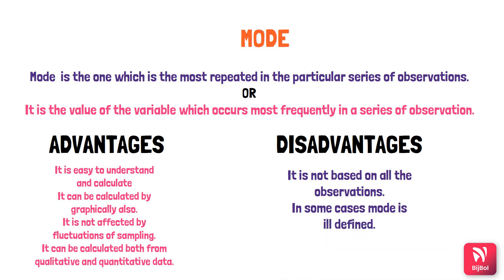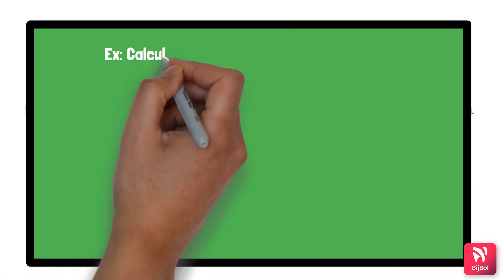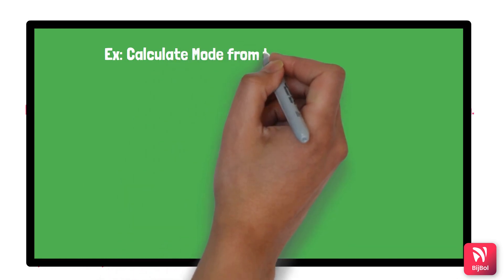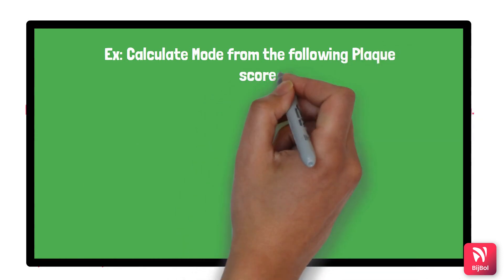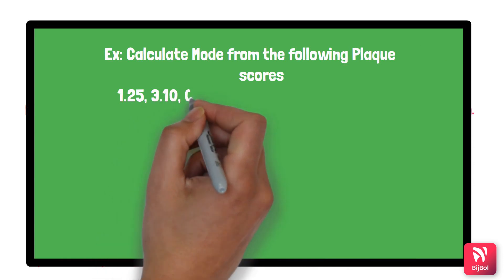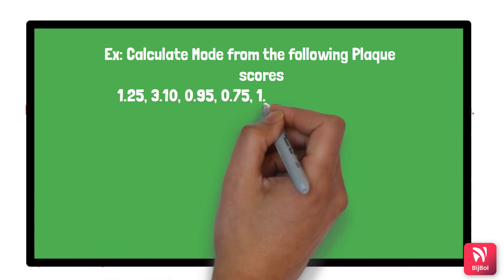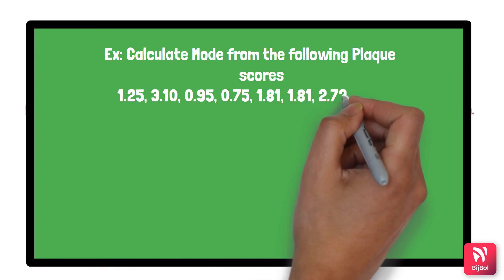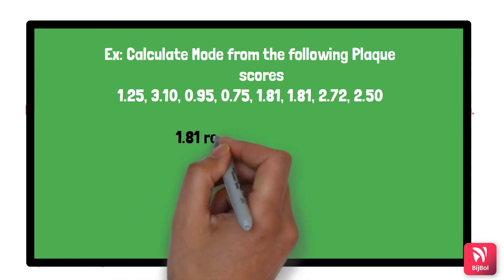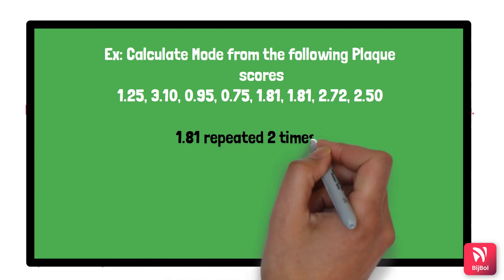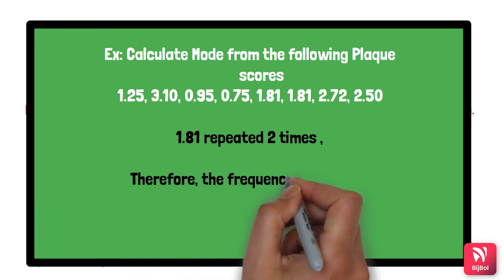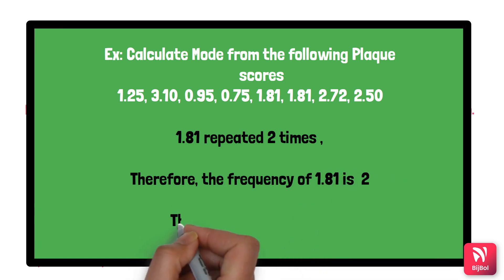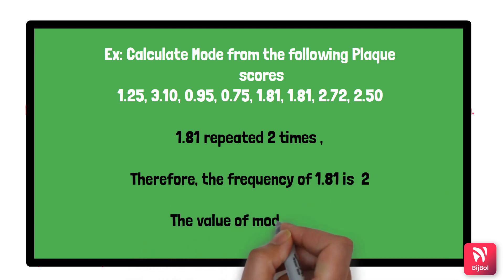For example, given PLAC scores of 1.25, 3.10, 0.95, 0.75, 1.81, 1.81, 2.72, and 2.50, the value that repeats most is 1.81, which appears 2 times. Therefore the frequency of 1.81 is 2 and the mode is 1.81.